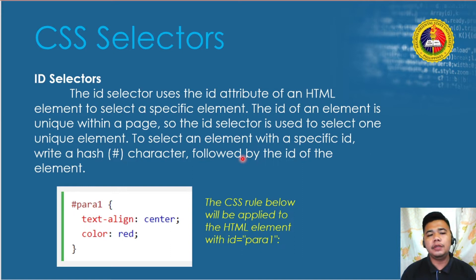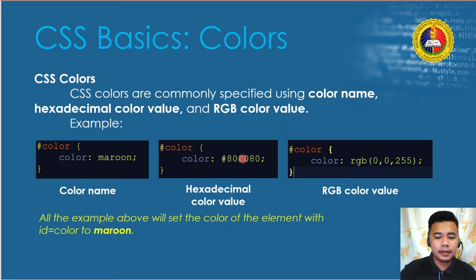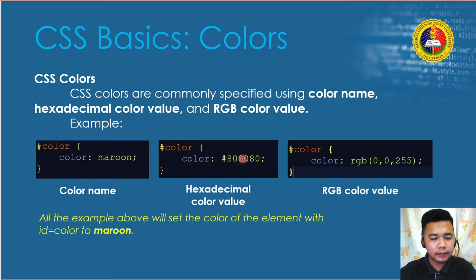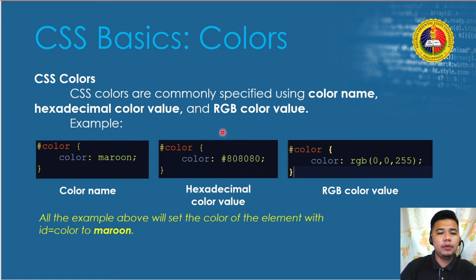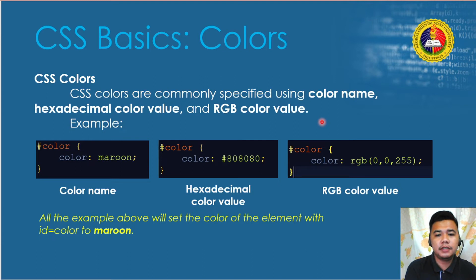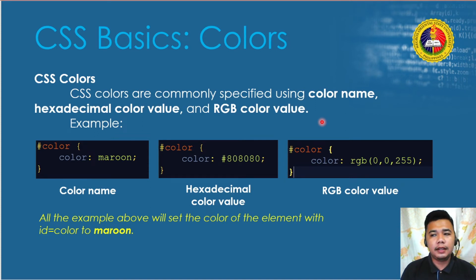Now let's learn some CSS properties for HTML, starting with colors. CSS colors are commonly specified using a color name, a hexadecimal color value, or an RGB color value. CSS colors allow us to add colors to HTML elements — we can specify the color using the actual color name such as red, orange, blue, or maroon. We can also use the hexadecimal color value, or the RGB color value.